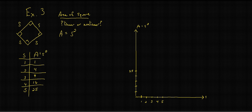So at 1 the area is 1, which is going to be right about here. At 2 the area is 4, which is going to be right about here. At 3 the area is 9, which is going to be right about here. At 4 the area is 16 square units, which is going to be right about here.